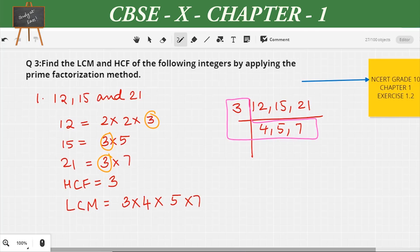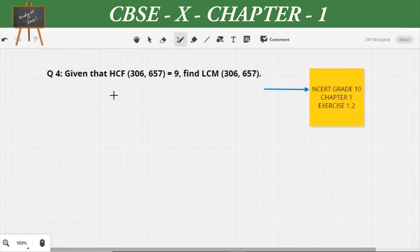So now the LCM of 12, 15, and 21 is equal to 3 × 4 × 5 × 7 which is equal to 420.